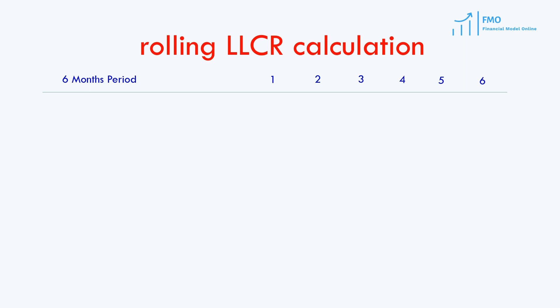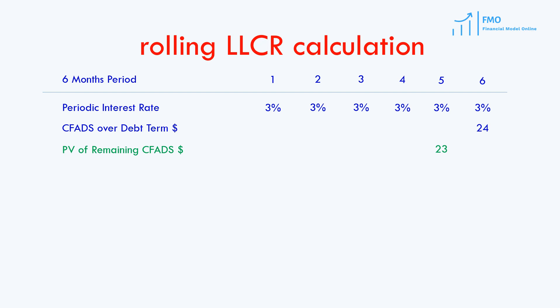Our timeline is a 6-month periods timeline. The first thing in the rolling LLCR calculation is the debt interest rate, which is 3% per period in this case. Then we need our CFADs over the debt's term. Note, however, that now we will start from right to left — from period 6 — so we are clear how rolling LLCR is calculated. We have our CFADs in period 6. Next, in period 5, we calculate the present value of the CFADs in period 6 at a 3% discount rate. We call it the present value of remaining CFADs. In period 4, we calculate the present value of CFADs in period 5 plus the present value of remaining CFADs at a 3% discount rate.